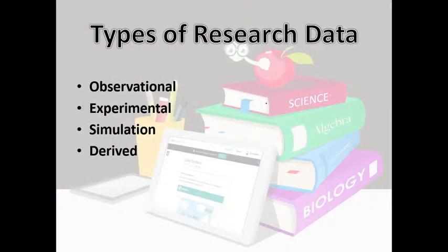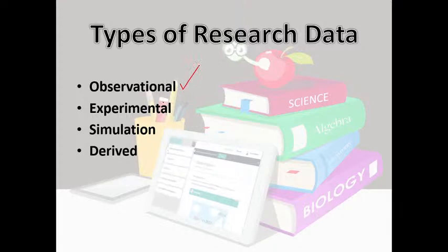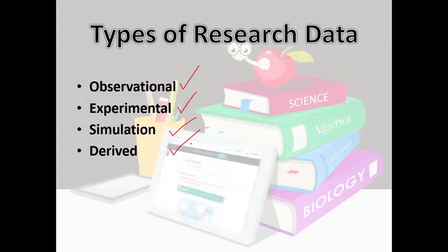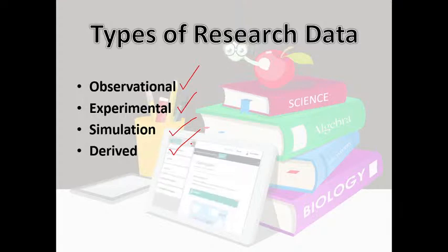Now let us discuss types of research data. First is observational data — we observe something using our five senses: see it, taste it, hear it, feel it, touch it. Observational data coming from observation is extremely sensitive. If observational data is lost, it is nearly impossible to regenerate it.